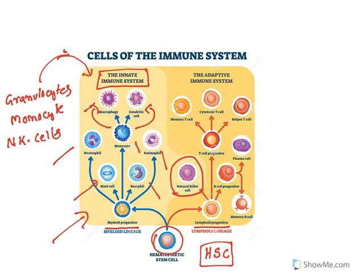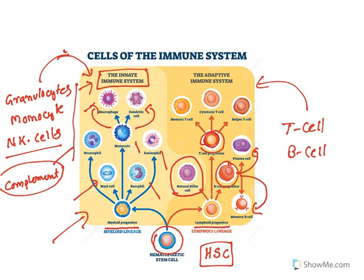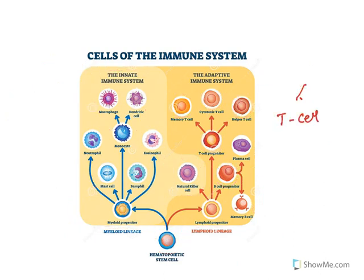These innate cells try to counter all infections with the help of the complement system, which is made up of around 30 plasma proteins. In the adaptive immune system, B cells can develop into plasma cells or memory cells, and T cells can give memory cells, cytotoxic cells, or helper T cells. So from T cells you get T helper, T cytotoxic, and T memory cells; from B cells you get B plasma cells and B memory cells.